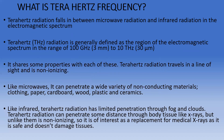Terahertz has some properties shared with microwave and infrared. It travels in a line of sight and is non-ionizing. Like microwave, it can penetrate a wide variety of non-conducting materials — clothing, paper, cardboard, wood, plastic, ceramics. Like infrared, it has limited penetration through fogs and clouds. The terahertz radiation can penetrate some distance through body tissue like X-ray, but unlike X-ray, it is non-ionizing, making it of interest as a safer replacement for medical X-rays.